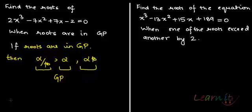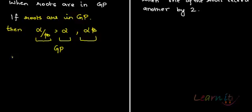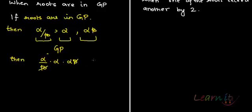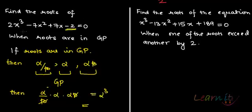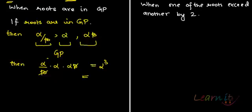According to the equation, the product (α/β) · α · αβ = α³ will equal -D/A, which is 2/2 = 1. So α³ = 1, which implies α = 1.